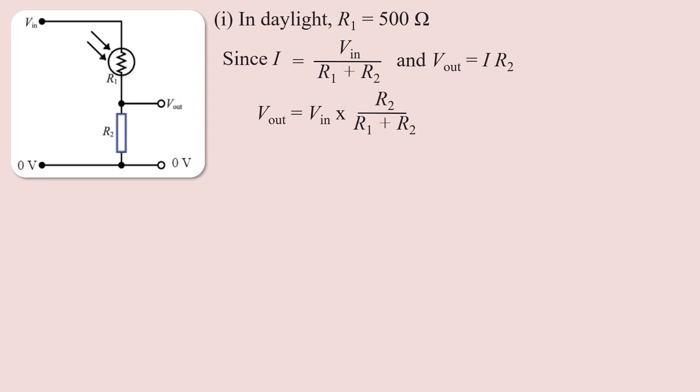The voltage across R2 equals Vin multiplied by R2 divided by R1 plus R2. This is the potential divider formula used to solve the problem.